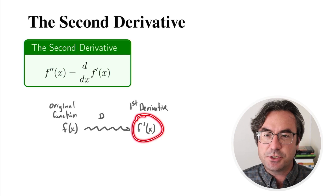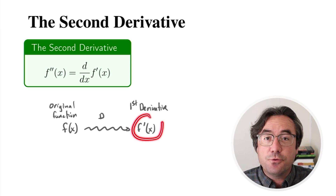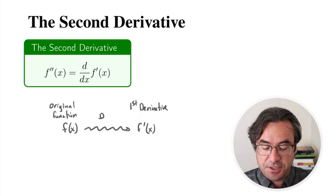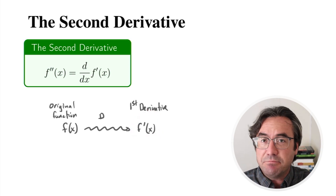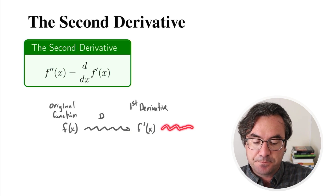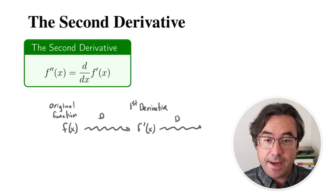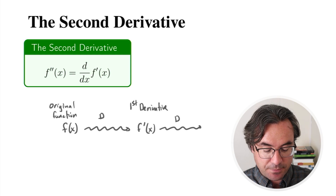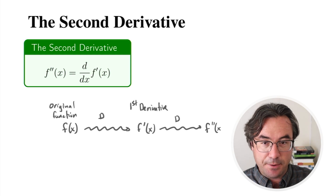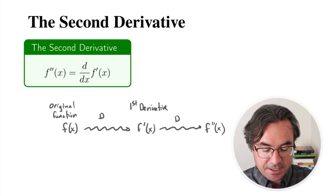So this is just a brand new function. We can take this brand new function, this formula that we have, and just repeat the process — differentiate that. When we do that, we get something we call f double prime, and this is the second derivative.